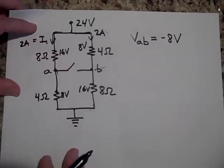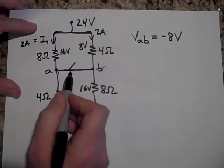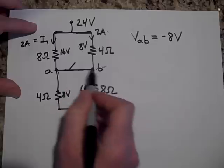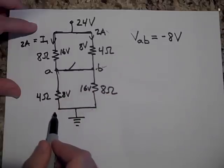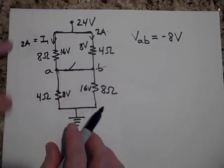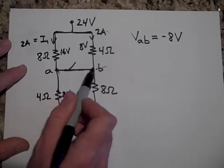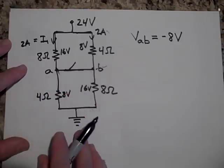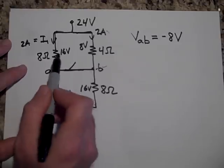Okay, now if they close this switch, now that's a different thing. Now they close that switch, now current can flow. And so, but what will happen is the voltage at A with respect to B will now be zero.